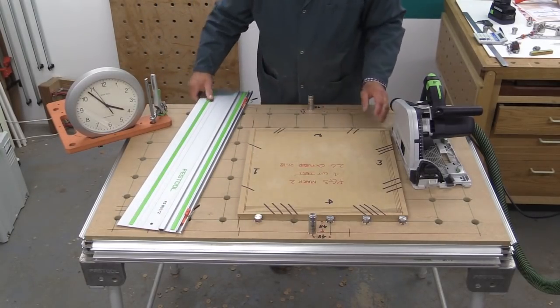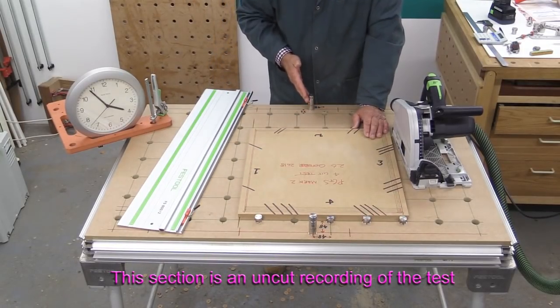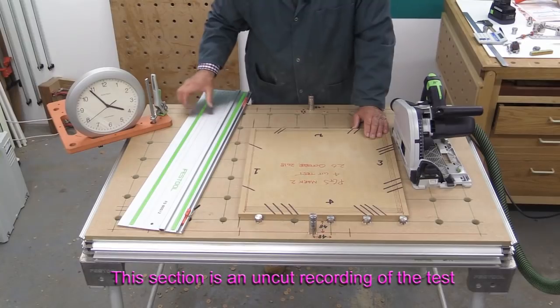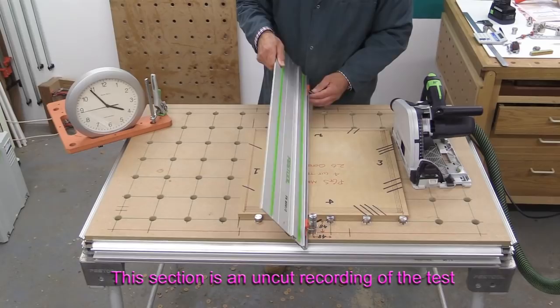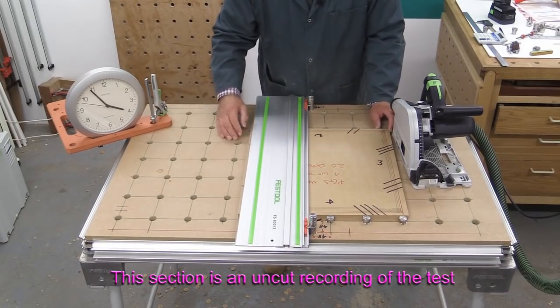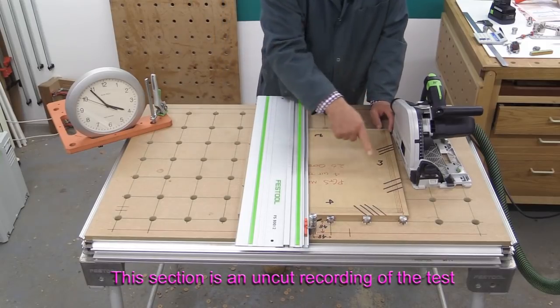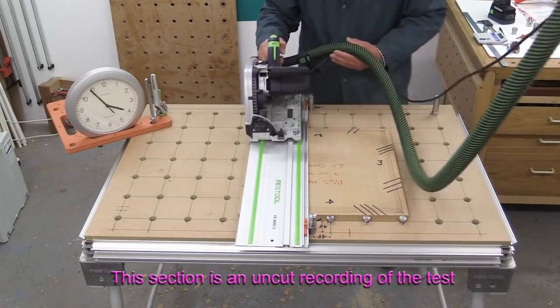I've got these guide pups here, a pair of Parf Super Dogs. And I'm using a standard Festool guide rail. And the guide rail is being held onto the Super Dogs with a pair of rail clips. And I'm going to start with one, two, three, and then four. And there's the clock, fingers crossed. We'll see how it goes.